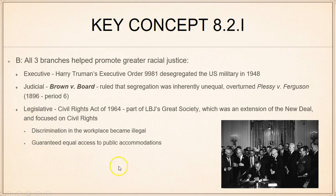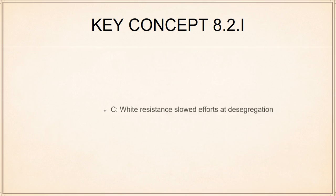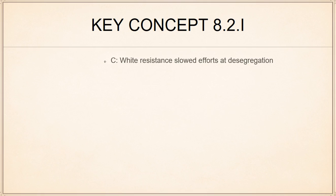Discrimination in the workplace became illegal and equal access to public accommodations was guaranteed. Saying it makes segregation illegal is kind of a misnomer, because de facto segregation still exists today. Discrimination, legalized segregation, and separate but equal are what the Civil Rights Act is aimed at — but it does not solve all of these problems by any stretch of the imagination.